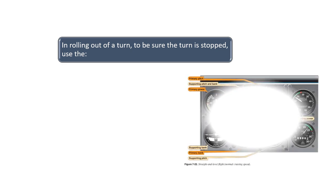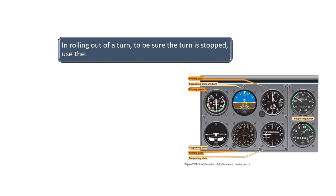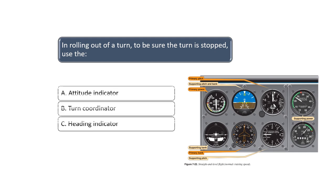In rolling out of a turn, to be sure the turn is stopped, use the... As you can see from the diagram on the right which can be found in Chapter 7 of the Instrument Flying Handbook, the primary bank instrument is the heading indicator. The correct answer is C.